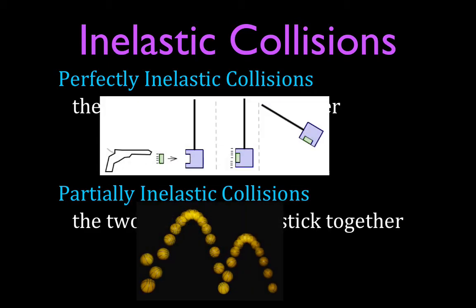Here is the typical perfectly inelastic collision — the ballistic pendulum. We take a bullet, shoot it into an object, it embeds in the object, and that object swings up. Those two objects stick together, and that is an example of a perfectly inelastic collision.